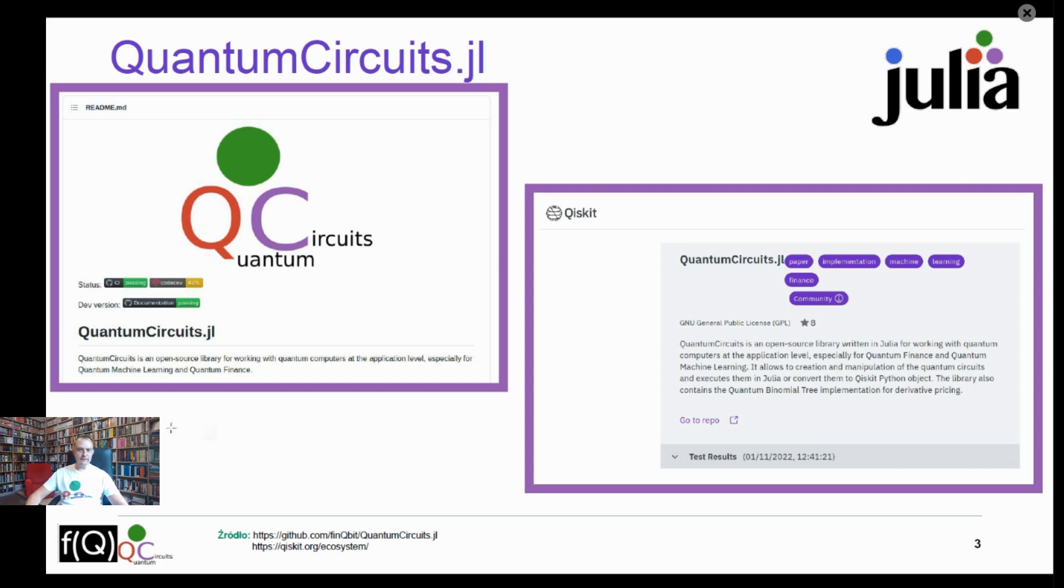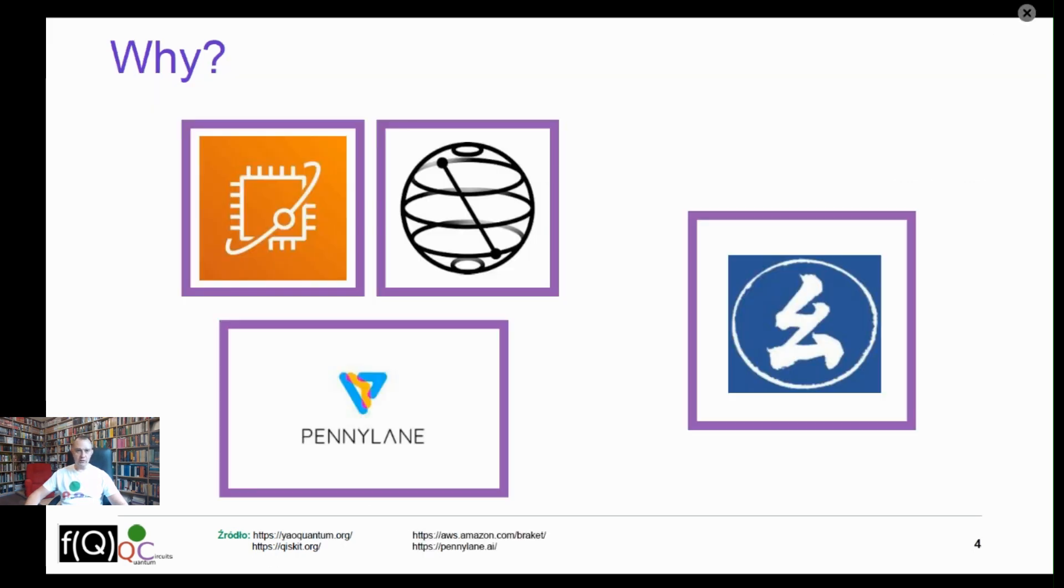QuantumCircuits is an open source library for working with quantum computers at the application level, especially for quantum machine learning and quantum finance. The library is also listed in the Qiskit ecosystem. In Julia, we can call the Python library using PyCall or Julia library also.